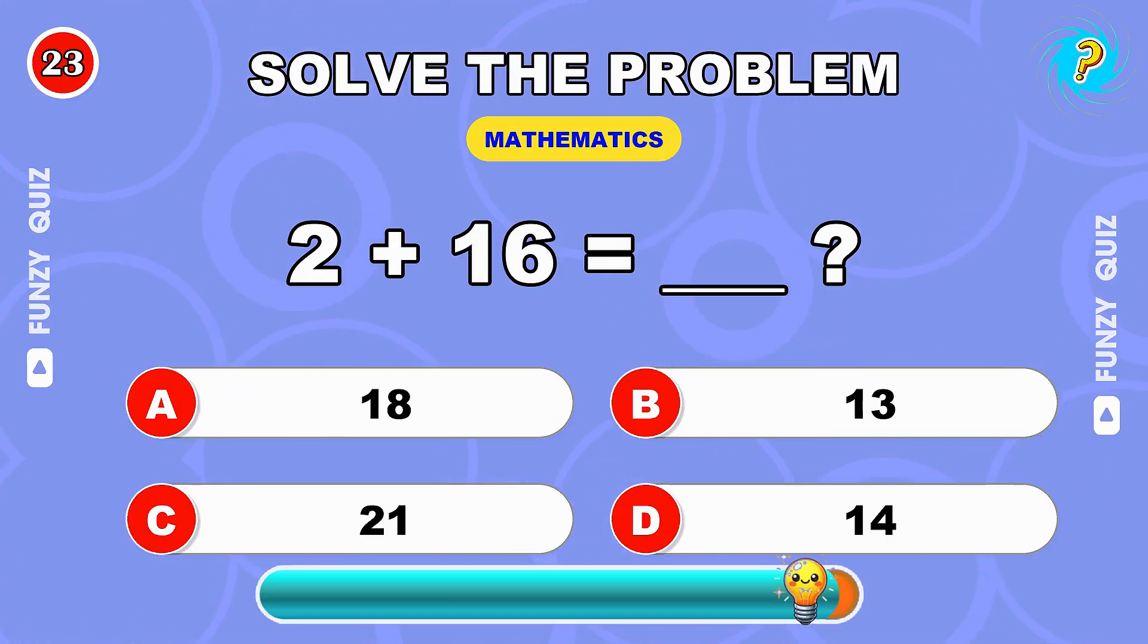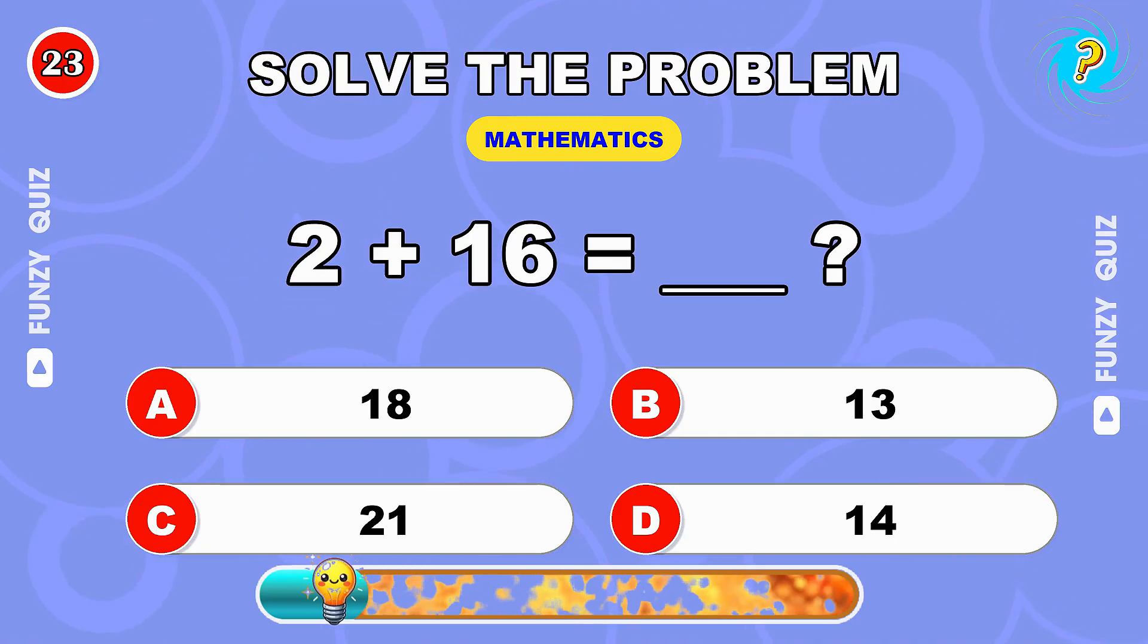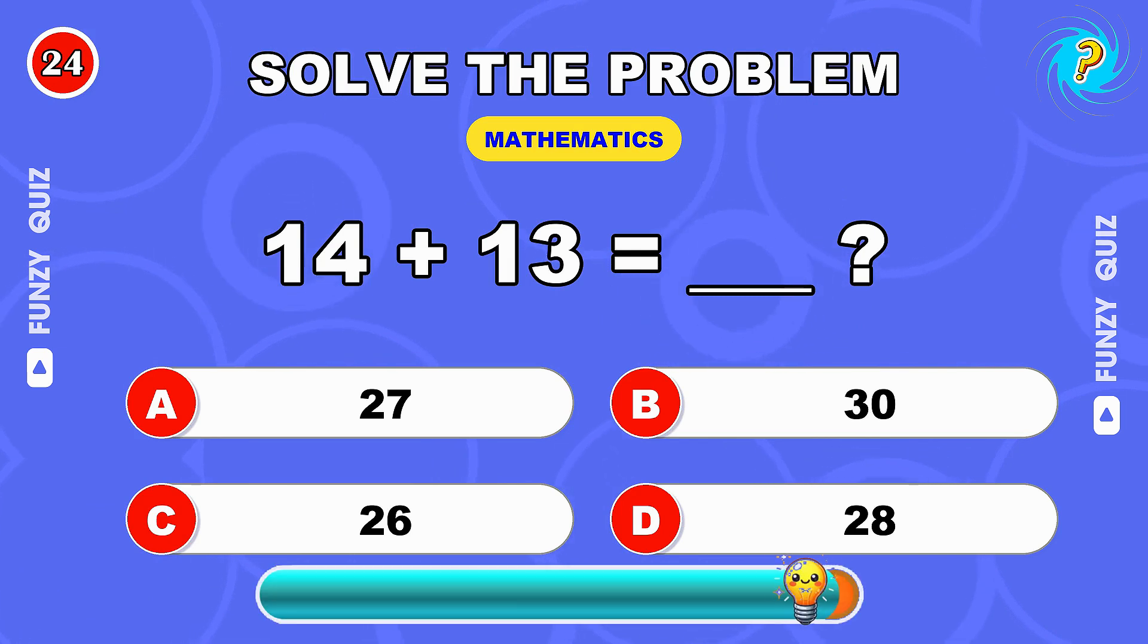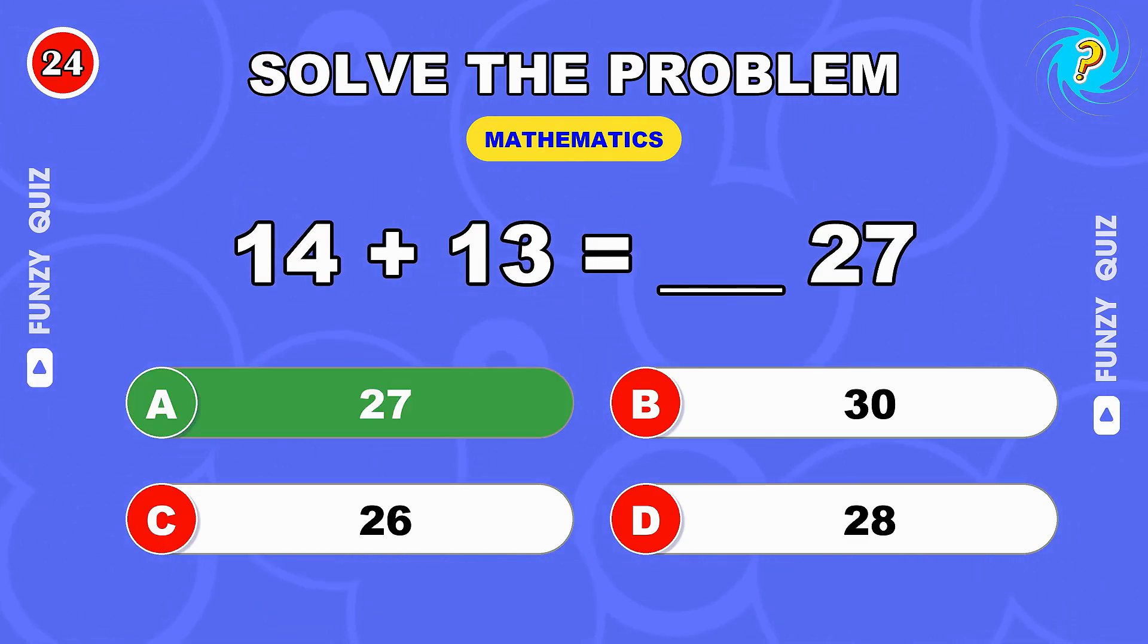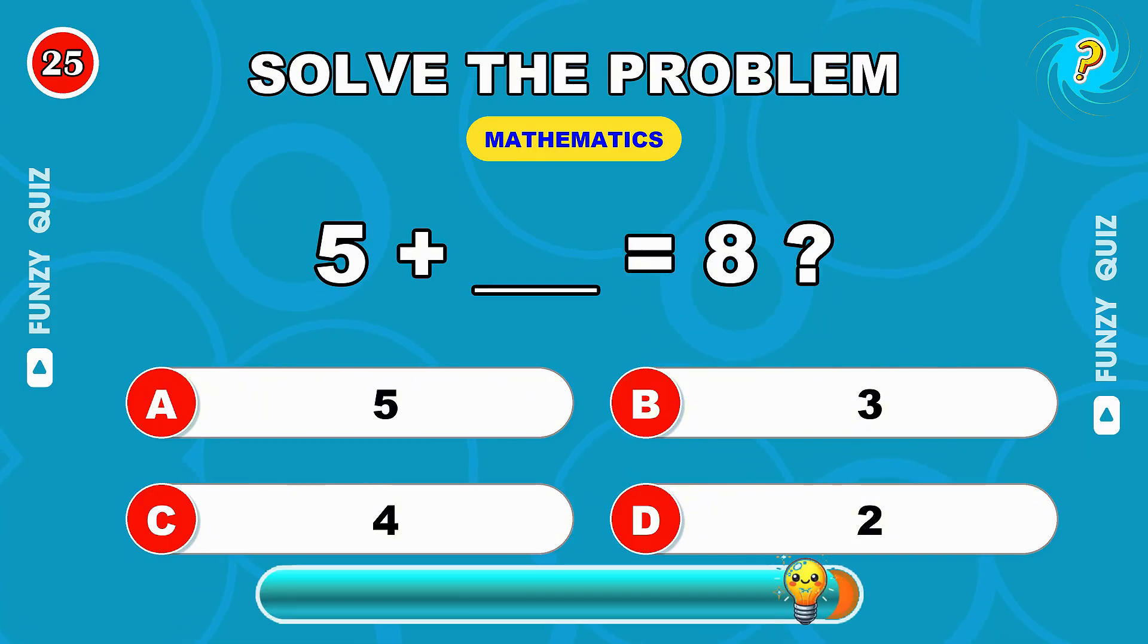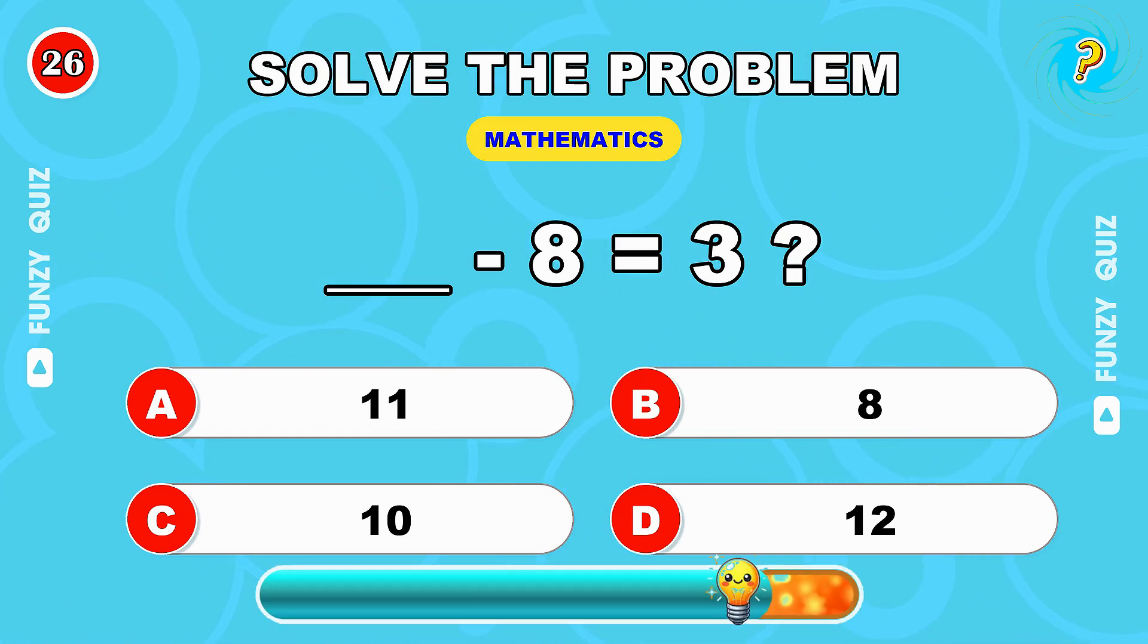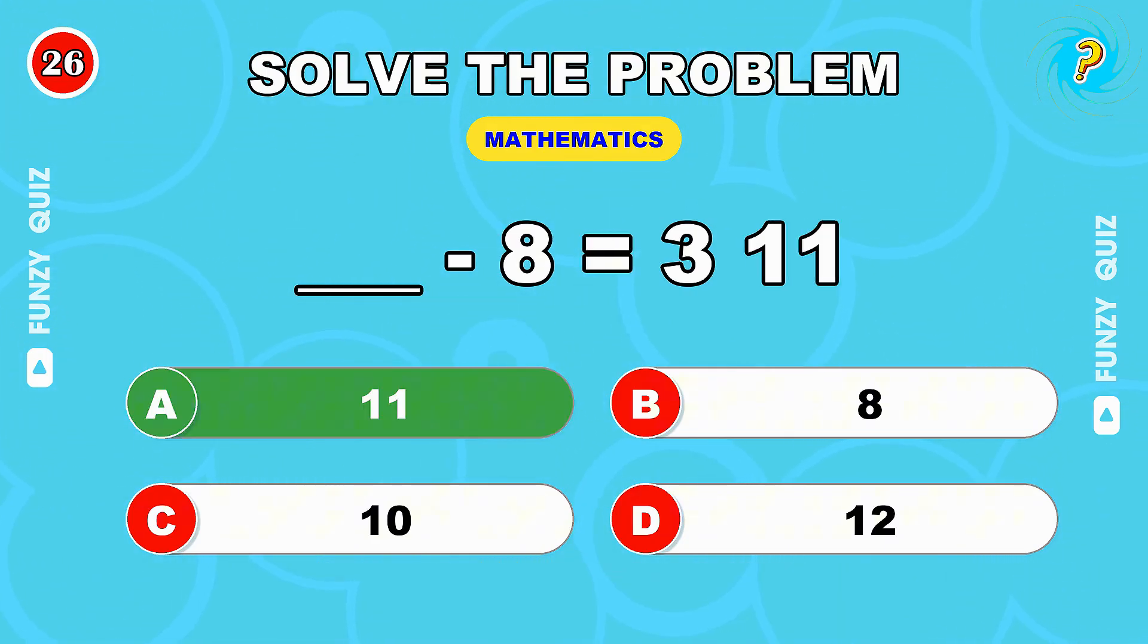12 minus what equals 9? 3, fantastic. 2 plus 16 equals what? 18. I think you're on fire. Here we go: 14 plus 13. 27, excellent. What number minus 8 equals 3? 11, correct answer.